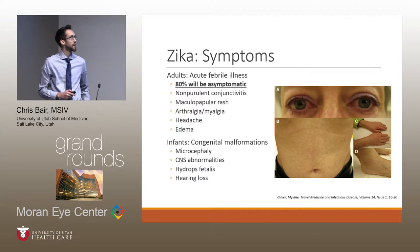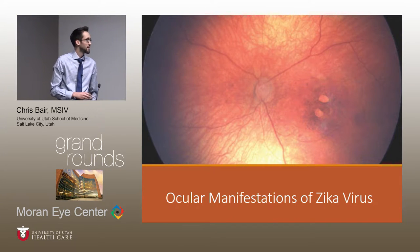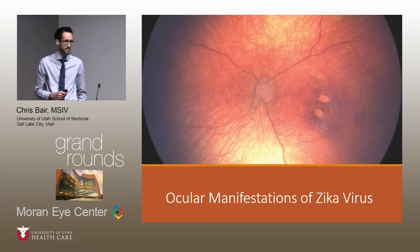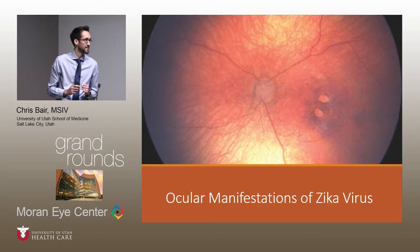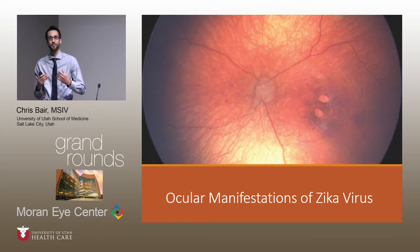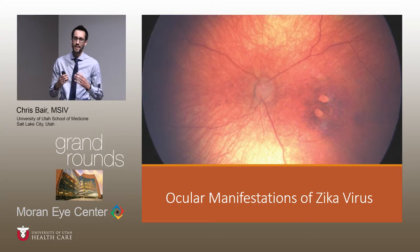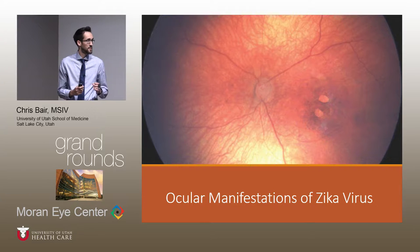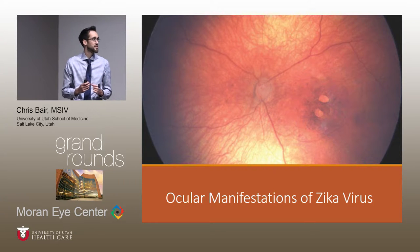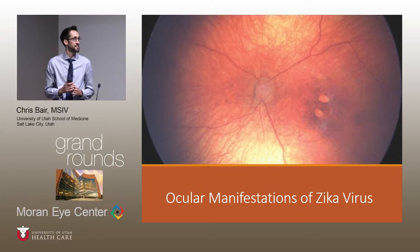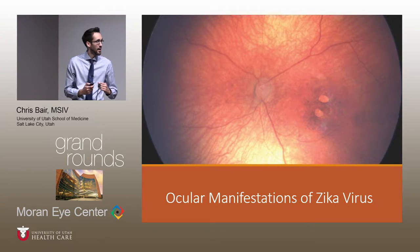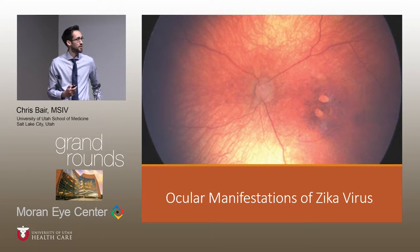Now we're going to get to the point we want to talk about: the ocular manifestations of Zika virus. We've had outbreaks in 2007 and 2013, and the only ocular manifestations we really saw in those outbreaks was that nonpurulent, self-limited conjunctivitis. But over the last about six months, there's been a lot of new information that's come out about new ocular findings in Zika virus. I want to take you through the timeline of the research done over the past six months and show the evolution of our knowledge.